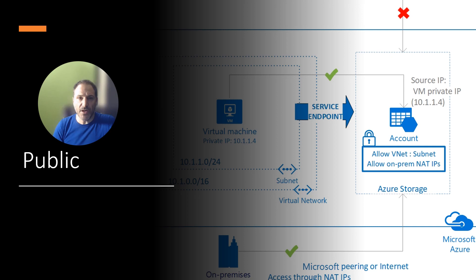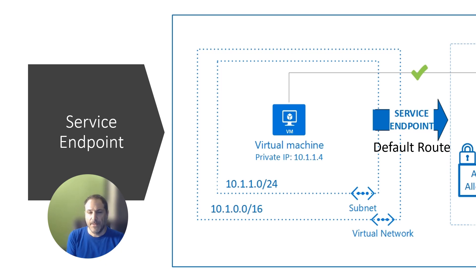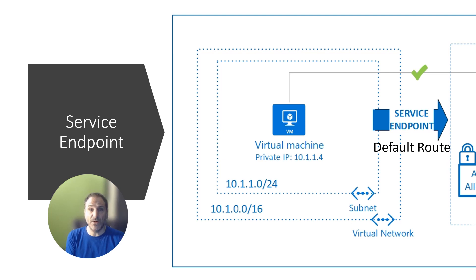The communication by default, if you are not changing the configuration offered by the resource, it will be and remain public. So how do you fix that? You can associate to the subnet a service endpoint. This will affect the default route on the subnet, so the next hop will be that service endpoint instead of the internet.